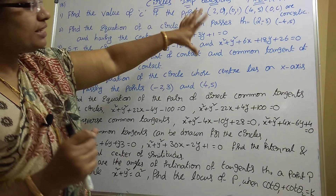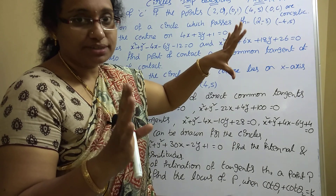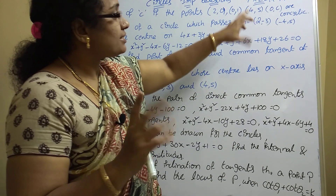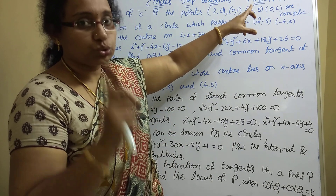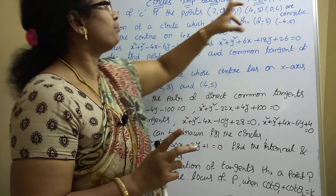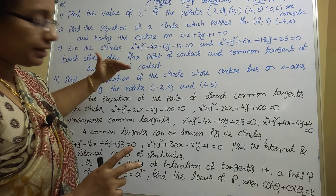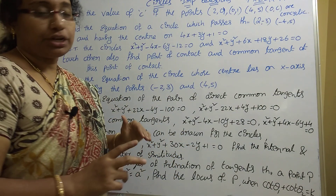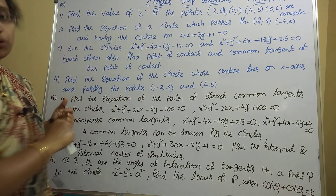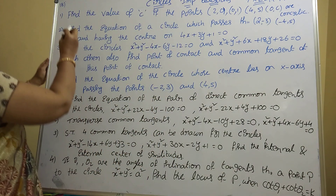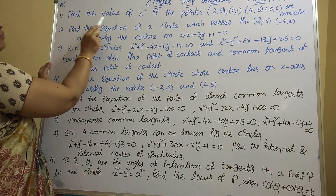In Circles, there are 7 to 14 marks. Two 7-mark sums will come. Every 18th bit and 19th bit will be from Circles only. So Circles carries 7 to 14 marks total. Now listen carefully — first question.